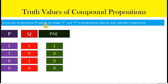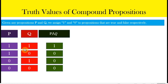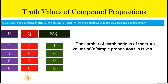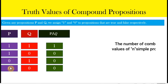If we add a third simple proposition r, then there would be eight possible combinations of their truth values. If we have four simple propositions, there would be 16 possible combinations. The formula is 2 raised to n, where n is the number of simple propositions. So 2 raised to 2 gives four combinations, 2 raised to 3 gives eight, and 2 raised to 4 gives sixteen.